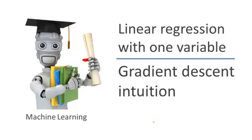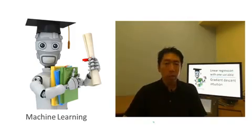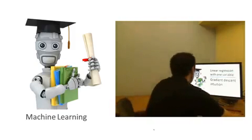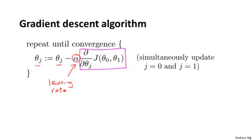In the previous video, we gave a mathematical definition of gradient descent. Let's delve deeper and in this video get better intuition about what the algorithm is doing and why the steps of the gradient descent algorithm might make sense. Here's the gradient descent algorithm that we saw last time. This parameter alpha is called the learning rate and it controls how big a step we take when updating parameters theta j. And this second term here is the derivative term.